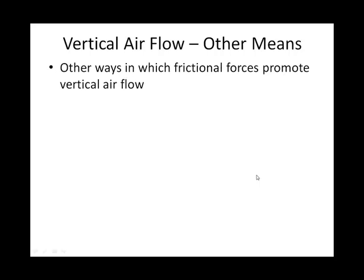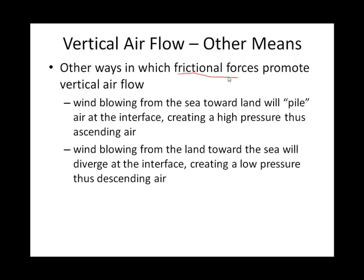A few other ways to create vertical flow of air all have to do with friction and changing coefficients of friction. Remember, friction over the sea is much less than friction over land. So as air moves from the sea to the land, there is more friction over the land, and this can create a convergence that makes air want to ascend vertically.